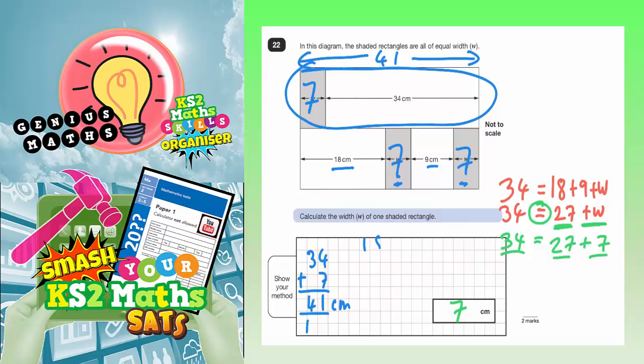So, we've got 18 plus 9 plus a 7 plus another 7. Now, we're expecting to see 41 again here, because this distance along the bottom should be equal to the 41 along the top.